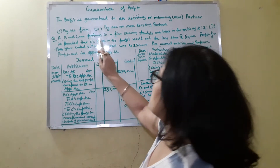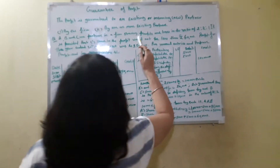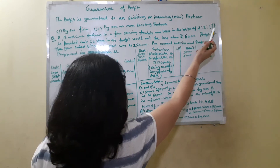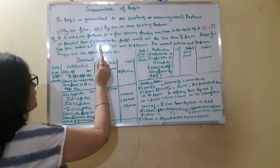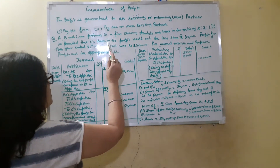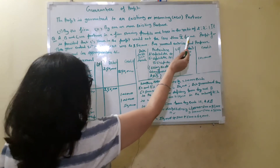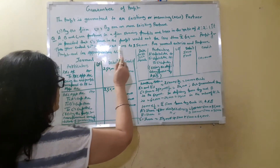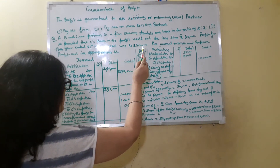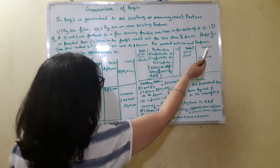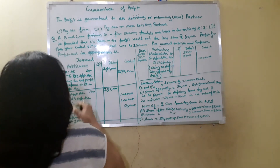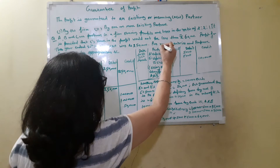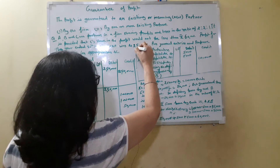The question is: A, B, and C are partners in a firm sharing profits and losses in the ratio of 2:2:1. It is provided that C's share in the profit could not be less than ₹60,000. Profit for the year ended 31st March 2020 was ₹2,50,000. Pass journal entries and prepare the Profit and Loss Appropriation Account.